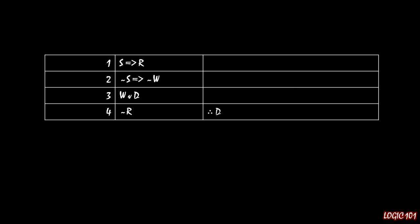You've seen proofs before. Something like this should look somewhat familiar — we just haven't been particularly rigorous with what we're doing, which I'm now going to be introducing to you. So here we have four different premises. On line 1, we see S implies R. On line 2, we see not S implies not W. On line 3, we have W or D. And on line 4, we have not R. And then at the end of those premises, we see those three dots, meaning we want to ultimately conclude that D is true.